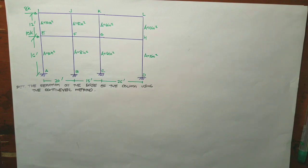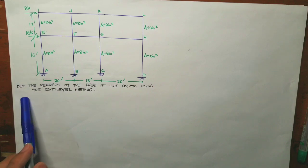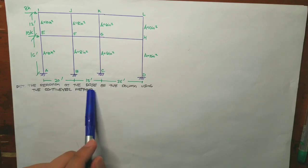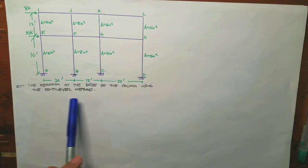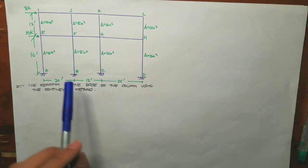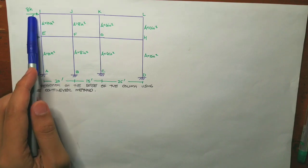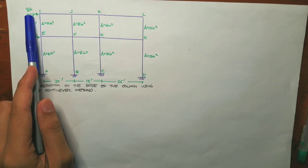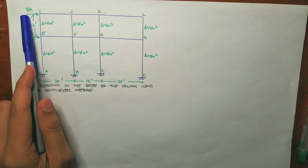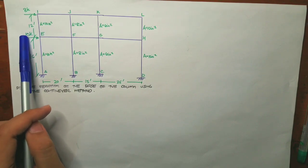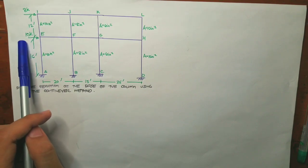For our next problem, we will now discuss the cantilever method. We need to determine the reaction at the base of the column using the cantilever method. At joint I, there is an 8 kips force acting to the right, and 12 feet below that is another force of 10 kips also acting to the right.